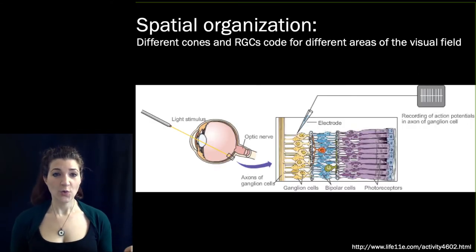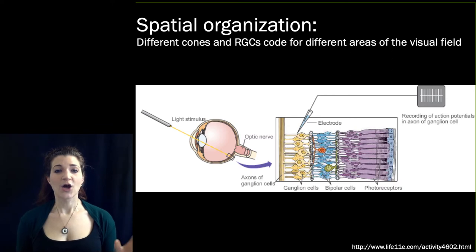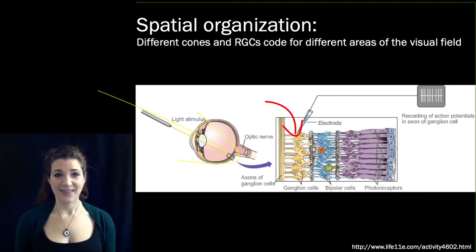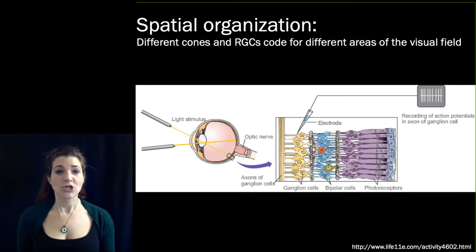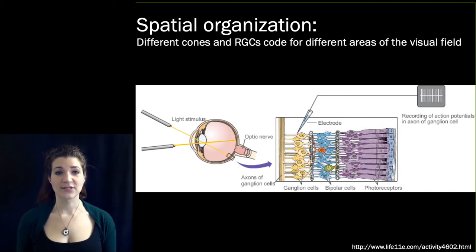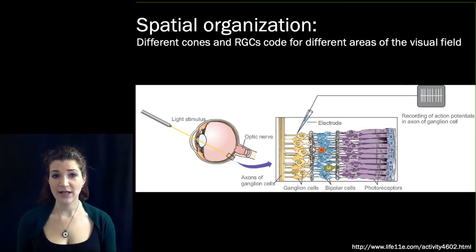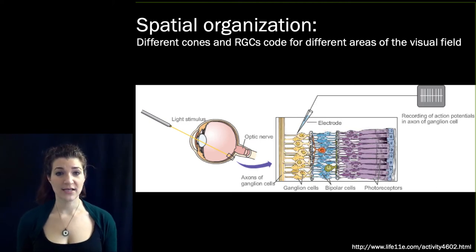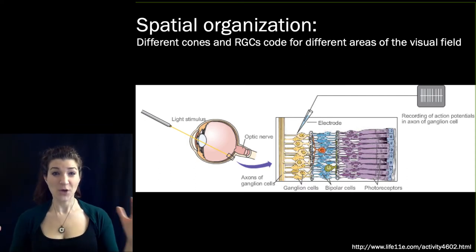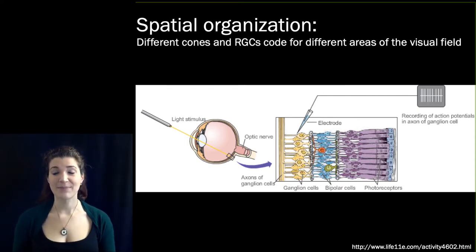Some locations that are very close together in space will be coded by the same retinal ganglion cell. Cones and the retinal ganglion cells they connect to code for different areas of the visual field — if we shine a spot of light here, this retinal ganglion cell is activated; if we shine a spot there, it activates a different retinal ganglion cell. So we know about where in the visual field objects are by looking at which retinal ganglion cells are active. To give a sense of the convergence: there are about 125 million photoreceptors but only about 1 million retinal ganglion cells in each eye.